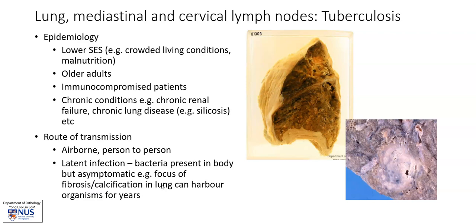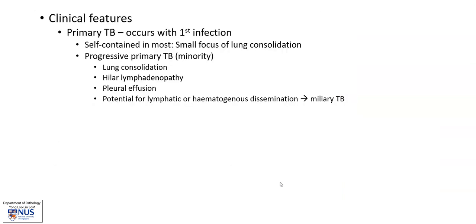There can be organisms there that are dormant and become reactivated many years later, for example if the patient becomes immunocompromised, and this may happen if perhaps the patient is receiving treatment for cancer. Clinically, there are several main manifestations of TB.